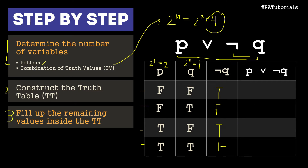Now we take the truth value of P and OR it with not Q. Remember, for OR, we always pick true — if we see a true, the statement is automatically true. So: false or true is true; false or false is false; true or true is true; true or false is true. That completes the truth table for P or not Q.